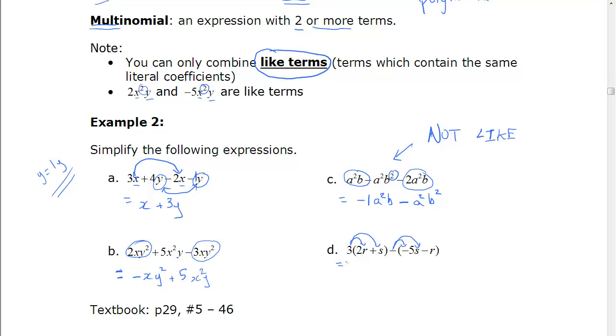So we'll simplify and get 6r plus 3s. 3 times 2r, 3 times s. Plus 5 times s. And plus r. Minus with minus is plus. Minus with minus is plus.